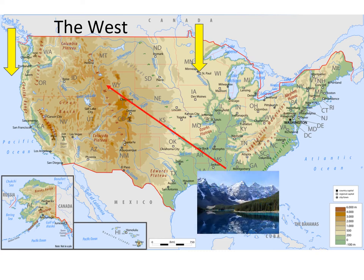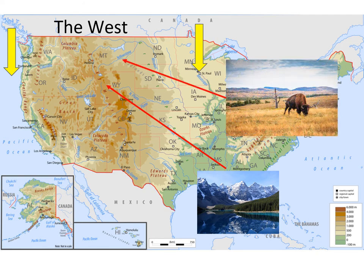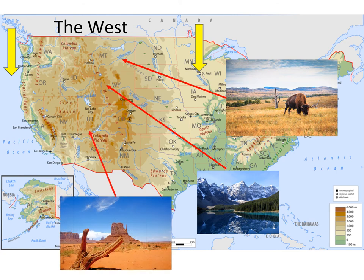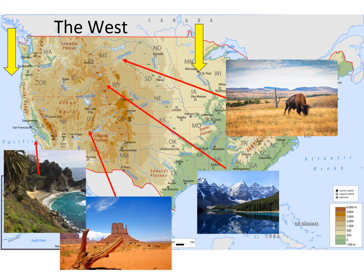This is a region of very high mountains — the Rocky Mountains. This is a region of vast cross plains where the buffalo roamed. This is a region of deserts, such as Monument Valley on the Utah-Arizona border. And this is a region of beautiful coastlines. It was this region that people in America became obsessed by, and you can see why from these images.